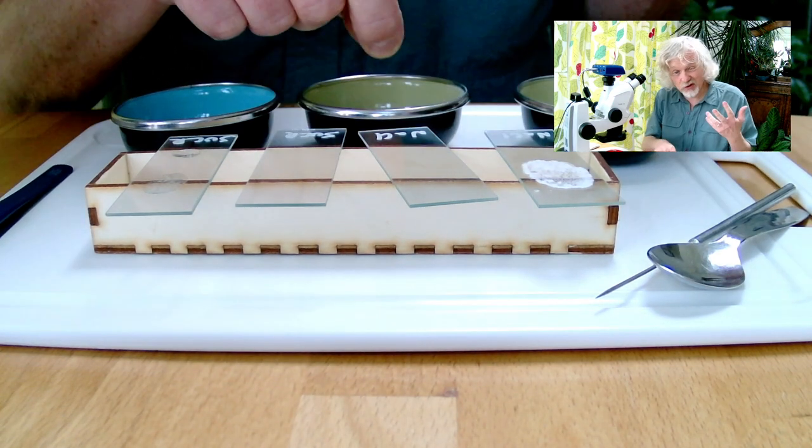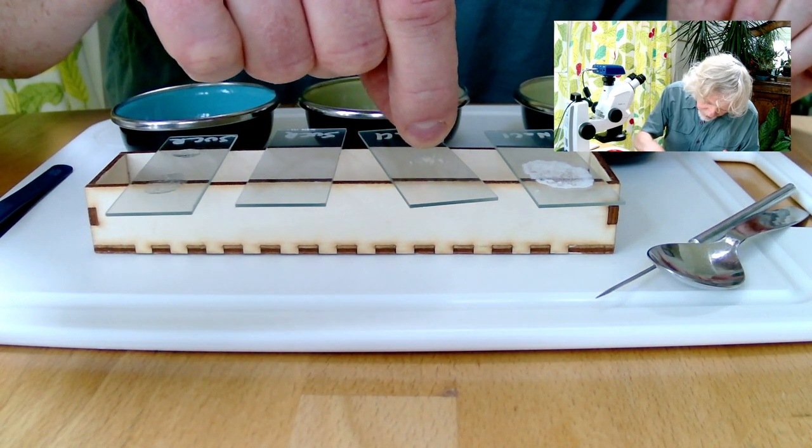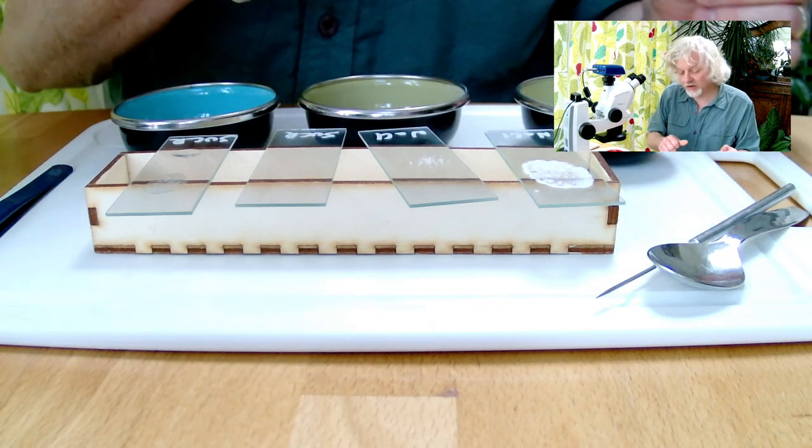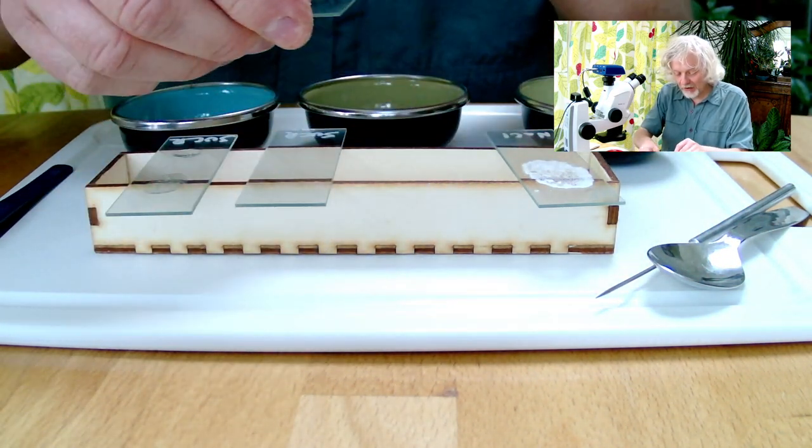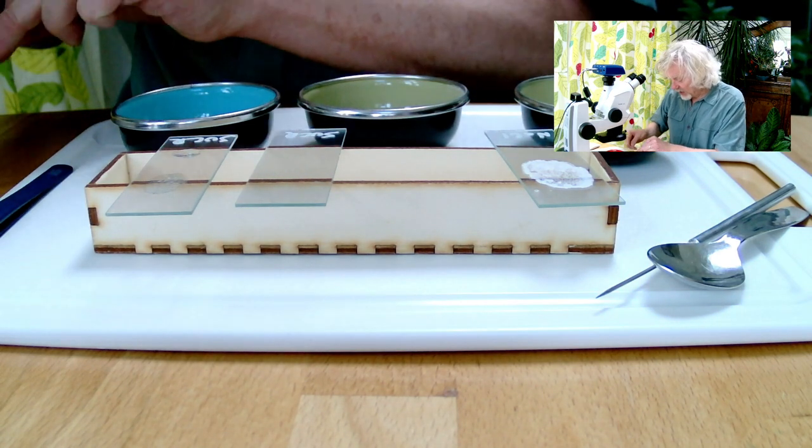I'm going to take just a few crystals and put that onto there like that. Just a few tiny crystals. This is just ordinary table salt, nothing fancy. And then that is going to go under my microscope, careful not to end up with it everywhere.